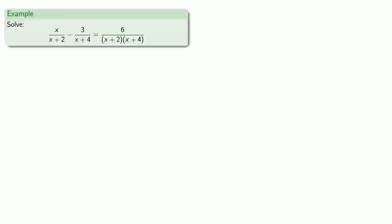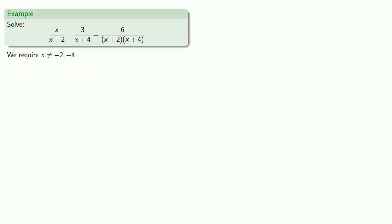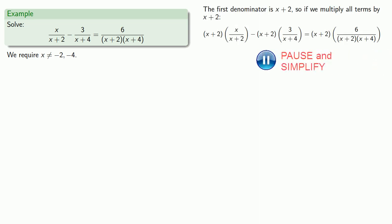So let's start off with this rational equation. And the first thing we do is identify any forbidden values. And so we require x not be equal to negative two or negative four. The first denominator is x plus two. So if we multiply all terms by x plus two. And now, because all of our fractions are product over product, we can begin cancellation. And since we've done something, we've obviously solved the problem.